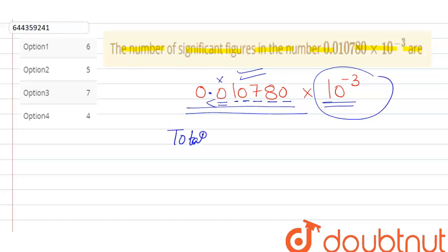Significant figures in the given number is equal to five. That means option two is correct.